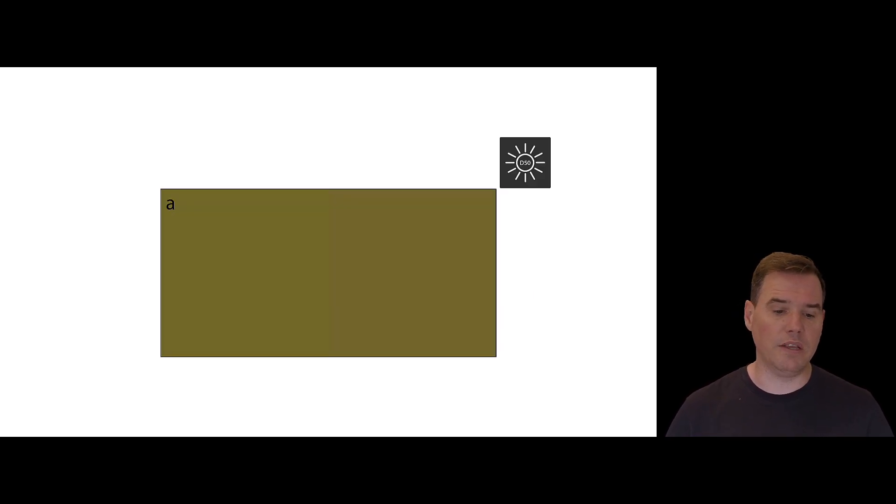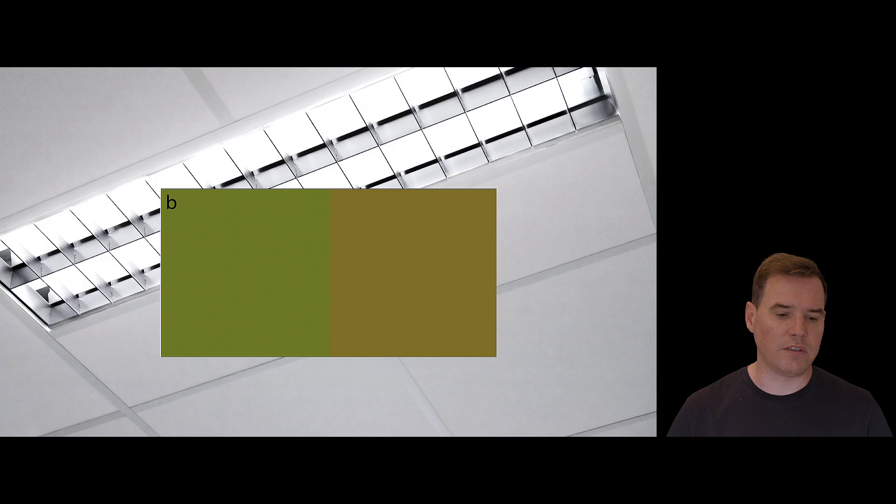So that when you view this color strip under D50 illumination, it looks almost like a uniform green. It's hard to distinguish. And then when you switch to a different color temperature, say fluorescent tubing, TL84 or something like that, you can obviously see a quite strong color difference. And this is a classic example of metamerism.